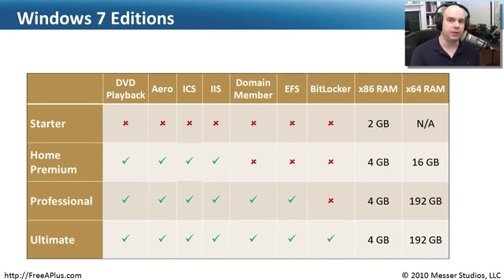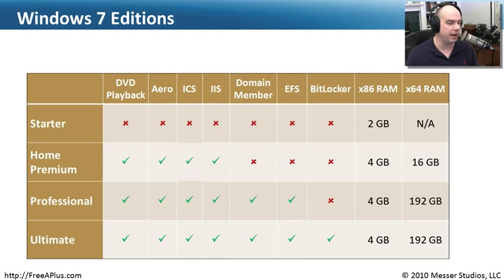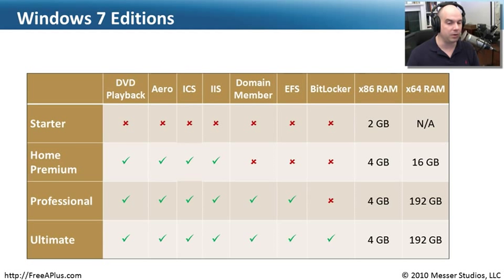To summarize the different editions, here's a comparison chart showing Windows 7 Starter, Home Premium, Professional, and Ultimate. Starter supports almost nothing and only 32-bit — no 64-bit support. Home Premium goes as far as allowing access up to its memory limit but stops before domain access. Windows 7 Professional includes EFS and domain capabilities and increases maximum memory in the 64-bit version. Ultimate has nothing but green checkmarks and the largest memory numbers — it supports everything.